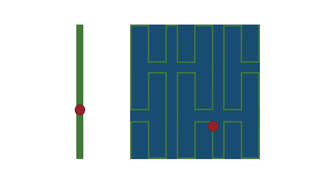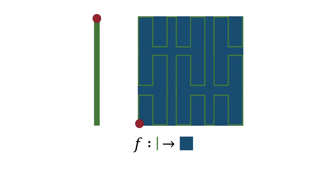By moving along this line segment, we can move along some portion of the square. We can make this path even finer by adding more twists and turns. If we repeat this process infinitely many times, we can actually create a path across the square that visits every single point. This path is unsurprisingly called a space-filling curve. Peano's curve is a function that maps the line segment to completely cover the square, and most importantly, this function is continuous.